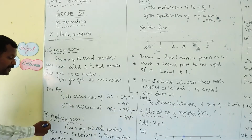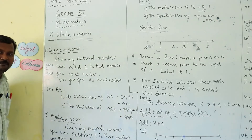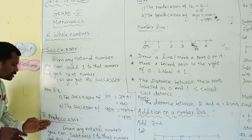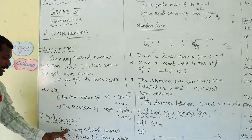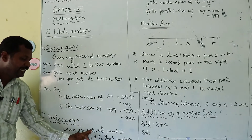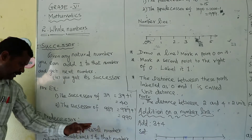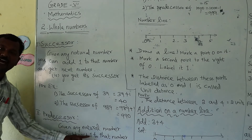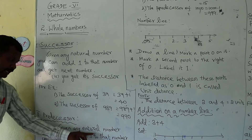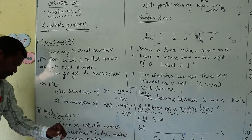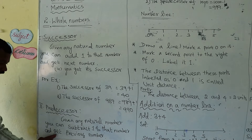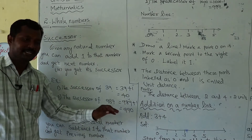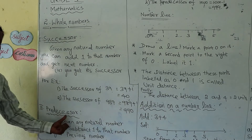Next one: predecessor. Predecessor means the number before. Given any natural number, you can subtract 1 from that number and get the previous number. That is, you get its predecessor.